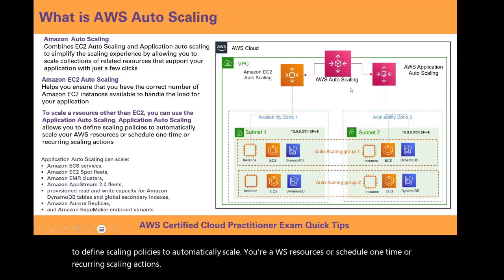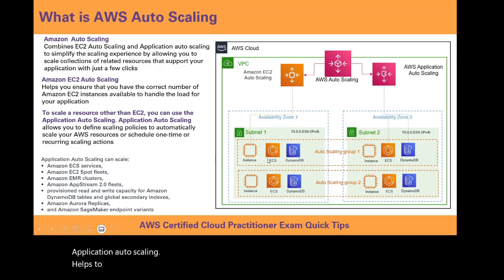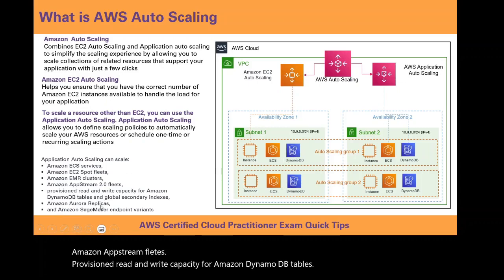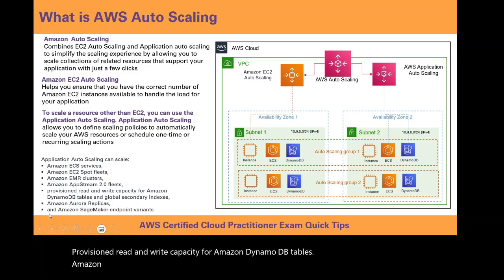Application autoscaling helps to scale Elastic Container Services, EC2 Spot Fleets, EMR clusters, Amazon AppStream fleets, provisioned read and write capacity for Amazon DynamoDB tables, Amazon Aurora replicas, and Amazon SageMaker endpoint variants.